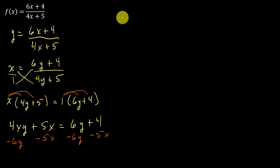And that's going to leave us with 4xy minus 6y equals negative 5x plus 4.